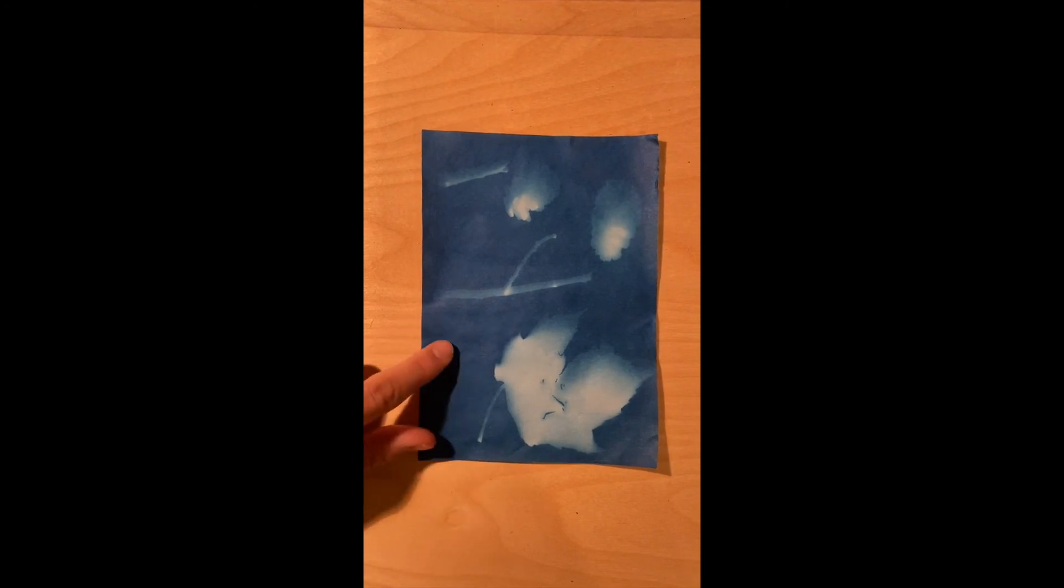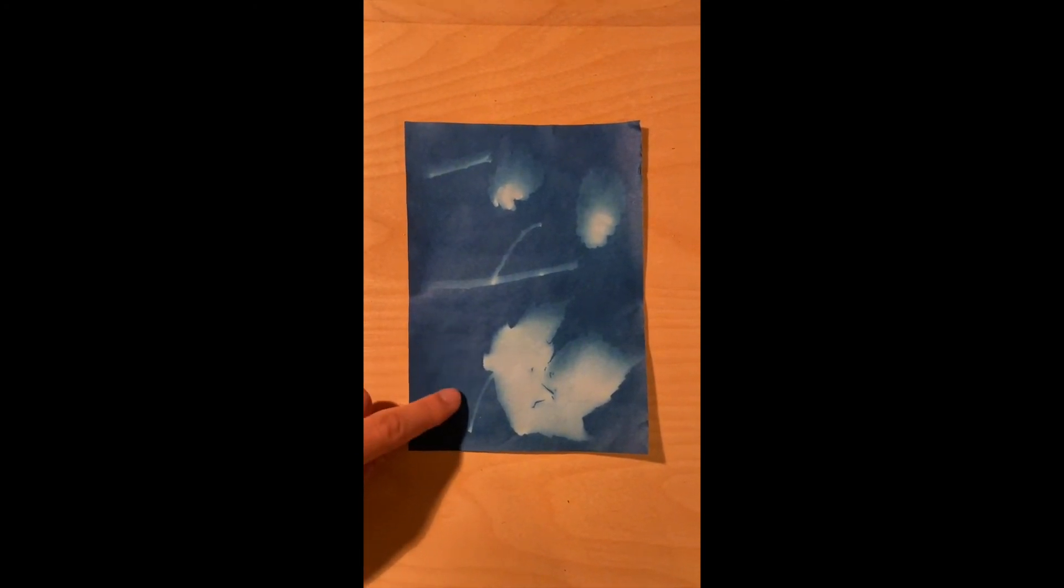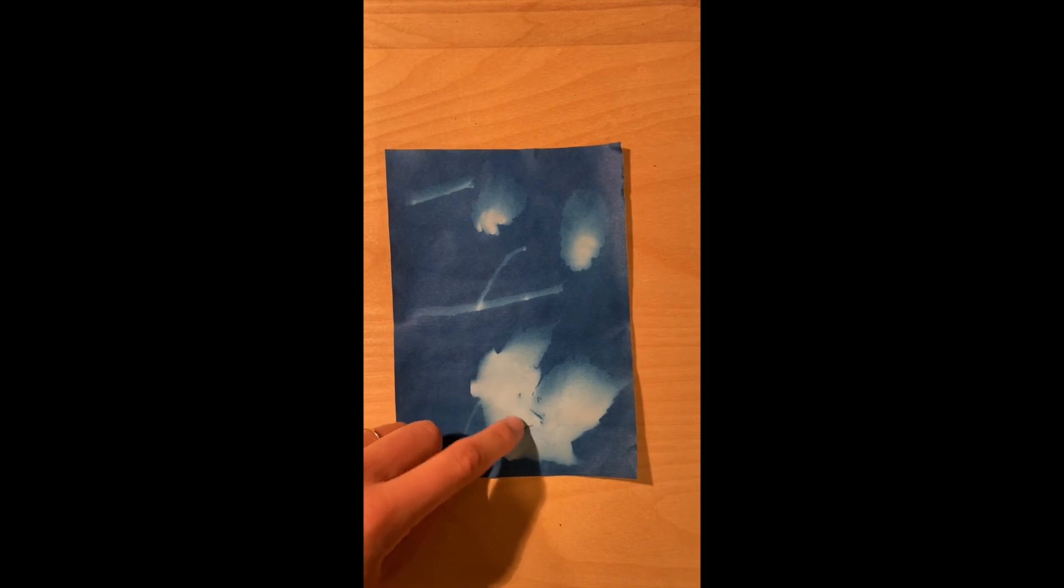I think it's pretty cool to see how our paper turned back to a dark blue color. And now our items are left in a white light blue color. What's your favorite item on the paper?